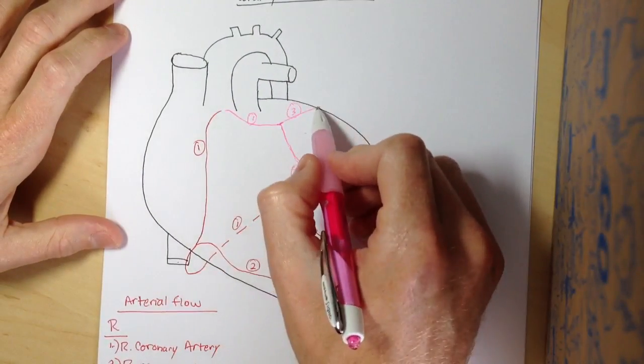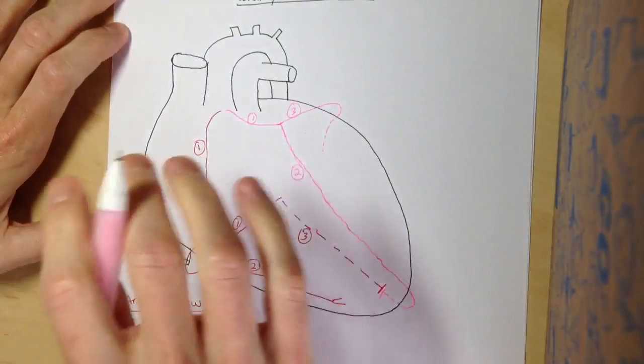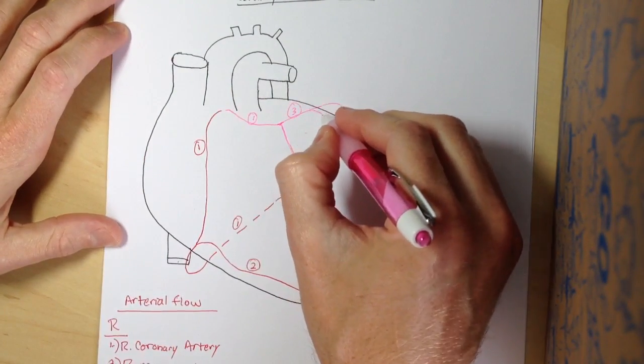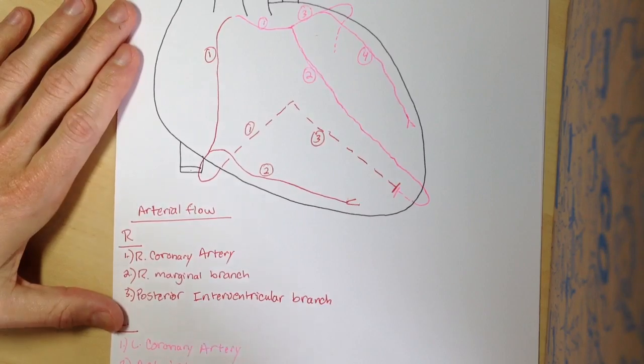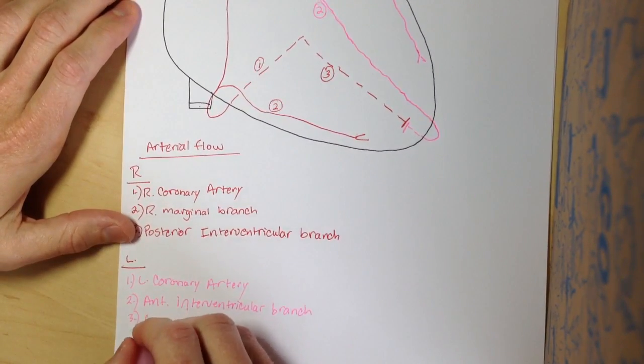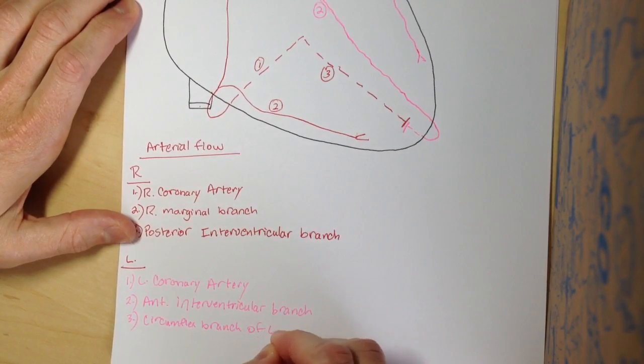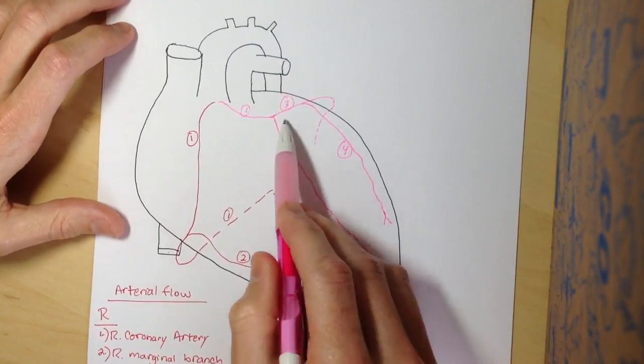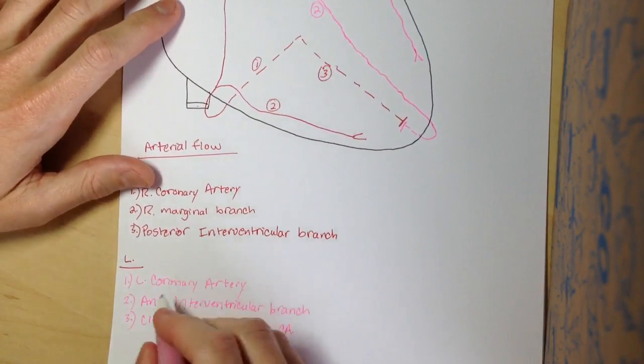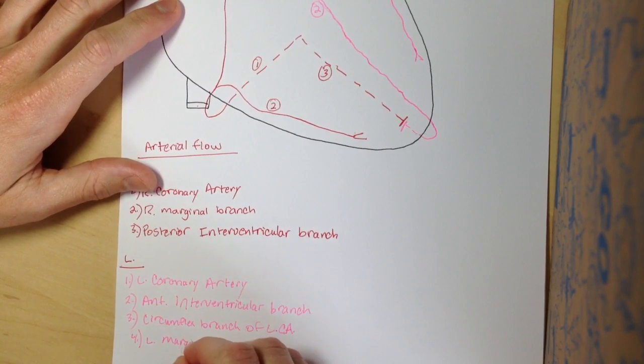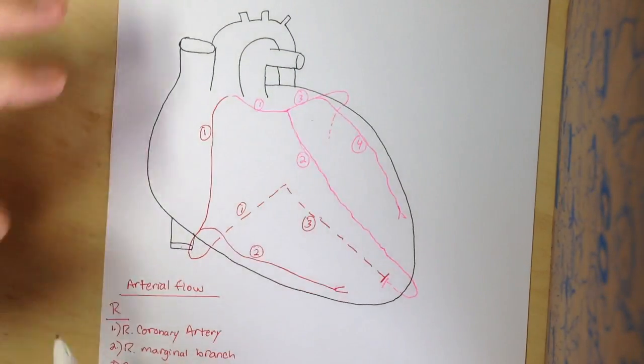The left coronary artery splits off up here. This is going to also loop around back, and basically peter off here. It's going to have some different, tiny, smaller branches, but not that we're worried about right here. And then it's also going to give a branch off over here. Number three is going to be called the circumflex branch of the left coronary artery. Circumflex branch just means that it's looping around back. Number four is the left marginal branch of the left coronary artery. Just like you have a right marginal, you have a left marginal branch as well.